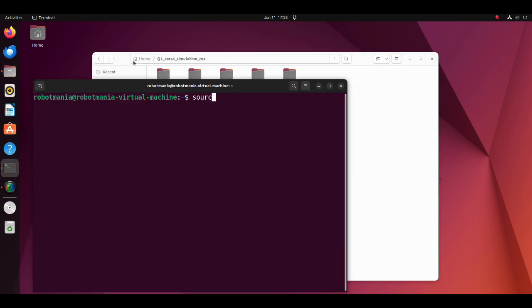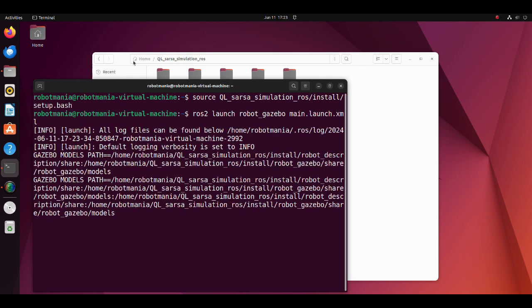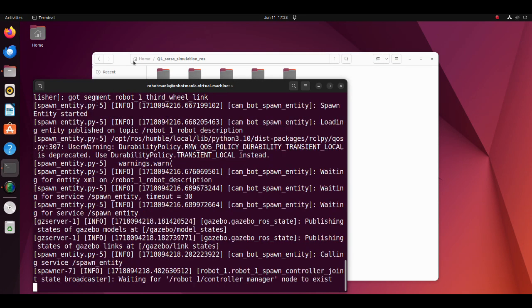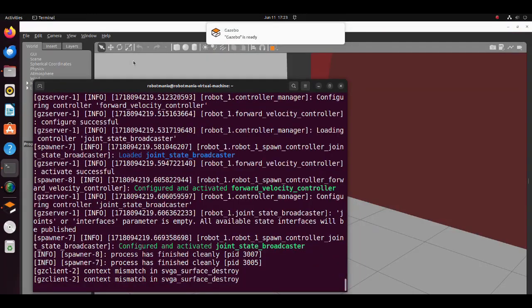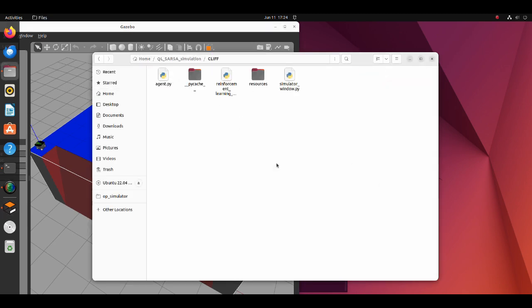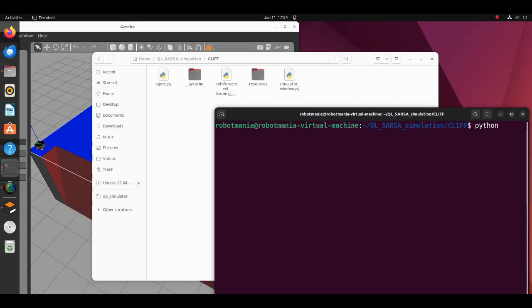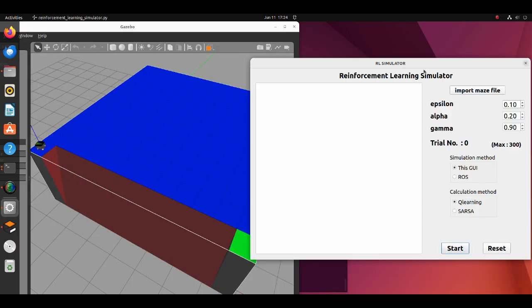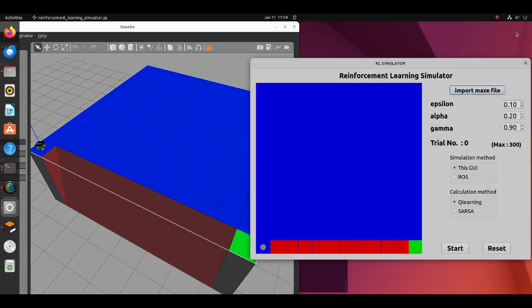To run gazebo, please execute the ROS2 launch robot gazebo main launch XML file. After a gazebo world emerges, run the reinforcement learning simulator .py script. Select one of the cliff files. Change the calculation method radio button to ROS and push the start button.